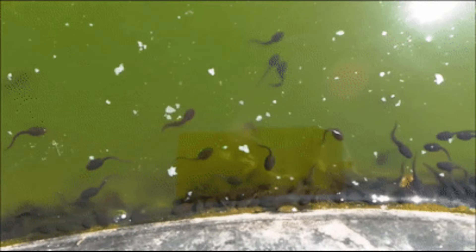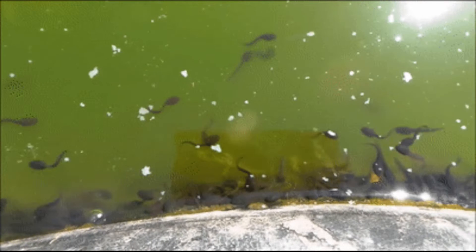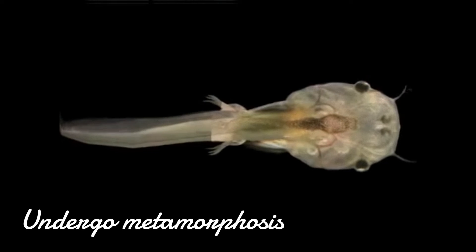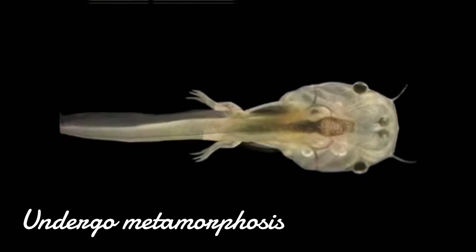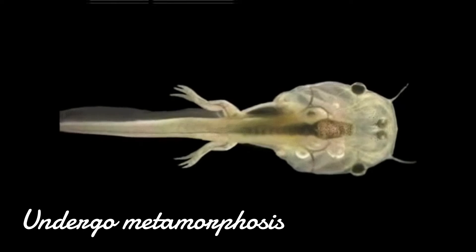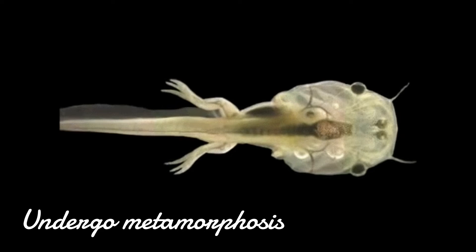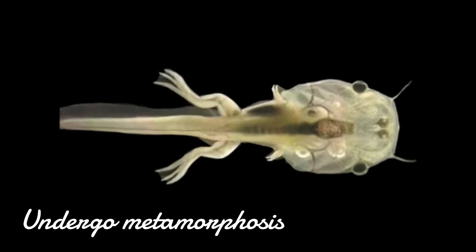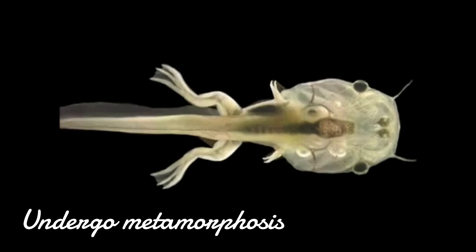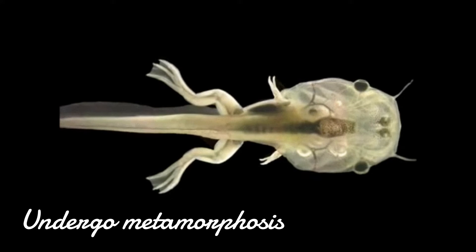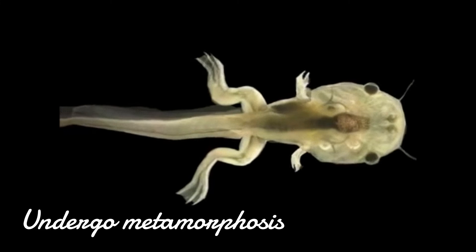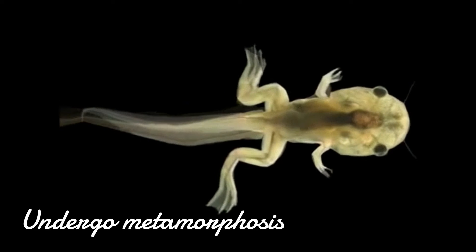These tadpoles grow and undergo a process called metamorphosis. During this stage they gradually develop hind legs, followed by front legs. Their tail slowly diminishes, and lungs replace gills, enabling them to breathe air.